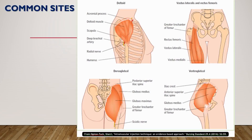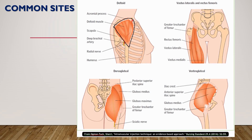Common sites for intramuscular injection: the chosen site in the upper limb is the deltoid, which is a multipinnate muscle. In the lower limb, the sites are the dorsogluteal and ventrogluteal regions, specifically the superolateral quadrant.